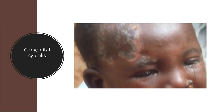Rhinitis — inflamed mucous membrane in the nose causing snuffles — may also occur. Other affected organs include the bones, kidney, liver, and lymph nodes. Neurological, ocular, and hematological involvement also can occur.